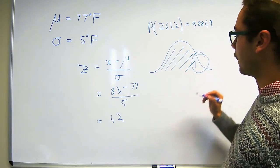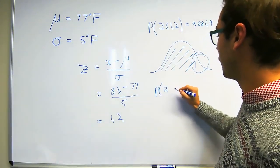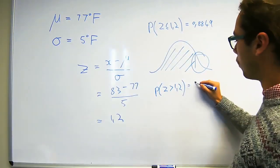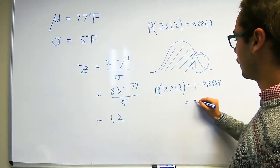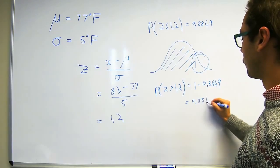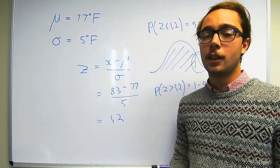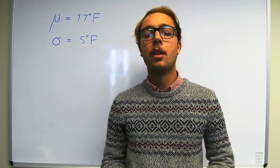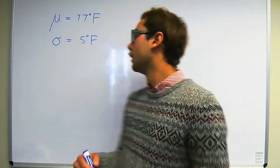And we're interested in this portion. So for that reason we say that the probability of z being greater than 1.2 is equal to 1 minus 0.8849 which is 0.1151. So the probability of observing a temperature greater than 83 degrees Fahrenheit is 0.1151.